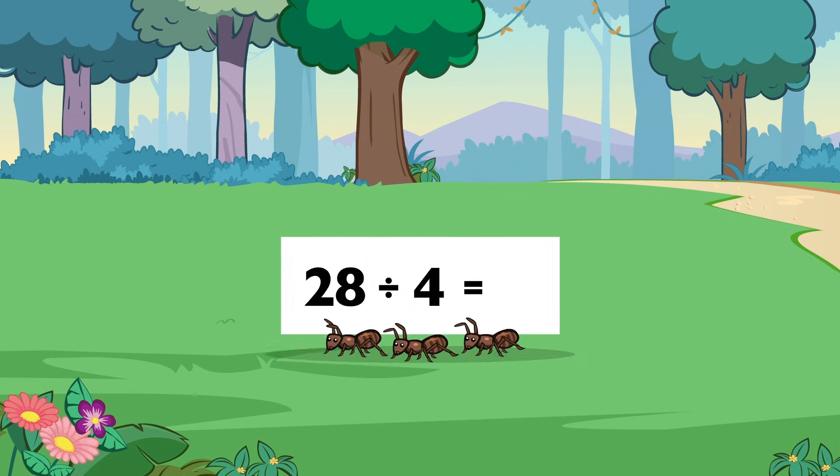Twenty-eight divided by four equals seven.